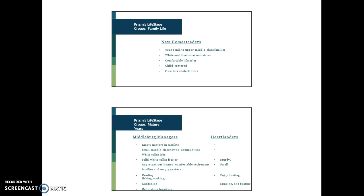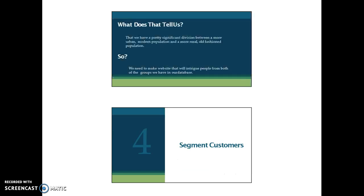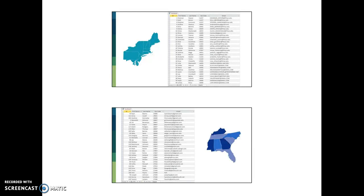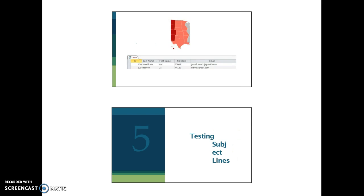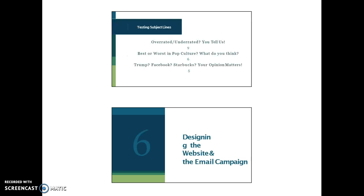This was telling some of the hobbies — and as you'll see, it's similar to something we're going to see in a minute with a database I'm actually working with now for Choice Hotels. They ended up concluding they had a significant division between an urban, modern population and a more rural, old-fashioned population. So they decided to make a website that will intrigue people from both groups — really one website. They segmented customers geographically. They tested some subject lines; they did their own survey to test the subject lines for their emails, making some judgmental decisions, but going through the concept of testing options. The winner was 'overrated, underrated — you tell us.'